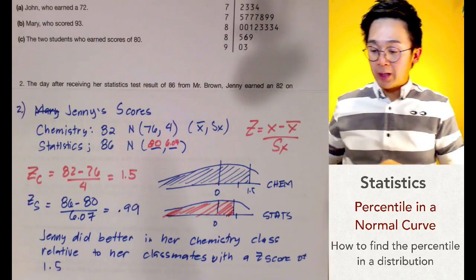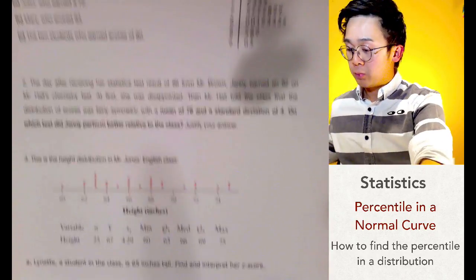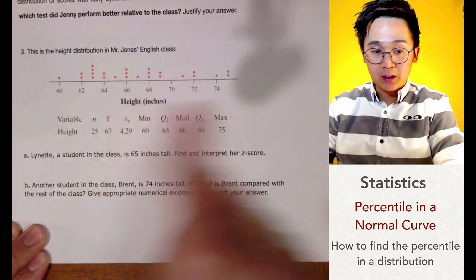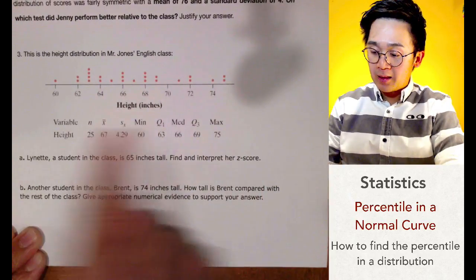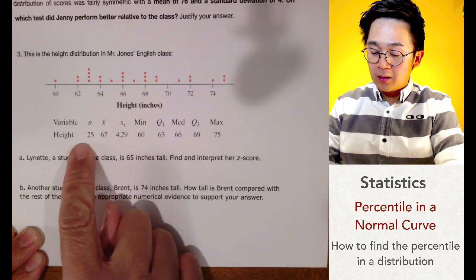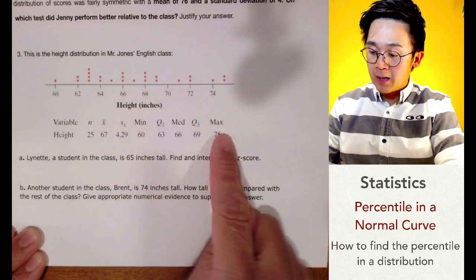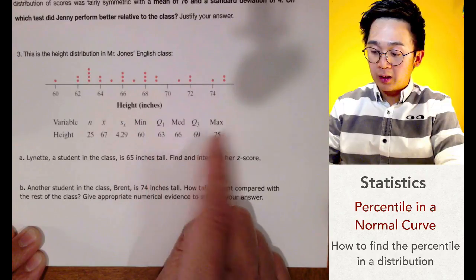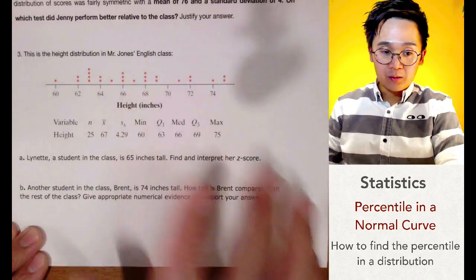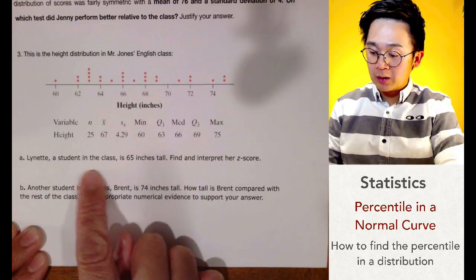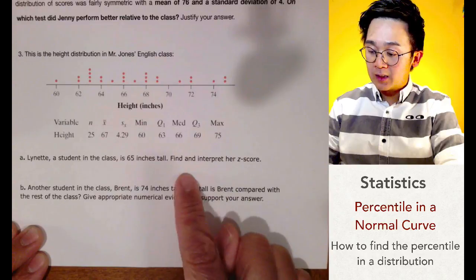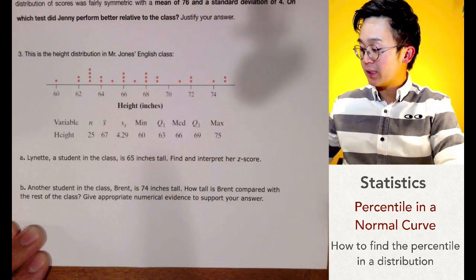That is how we answer problem number 2. For problem number 3, we are given a dot plot and a numerical summary including the mean, standard deviation, number of students, minimum, maximum, and quartiles. Lynette, a student in the class, is 65 inches tall. We need to find and interpret her z-score.